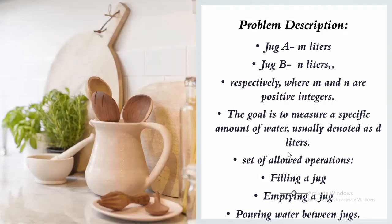This is the problem description. Suppose we are given two jugs, jug A and jug B, with the capacities of m liters and n liters respectively, where m and n are positive integers. We also have access to an unlimited supply of water.